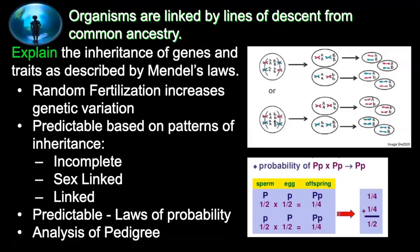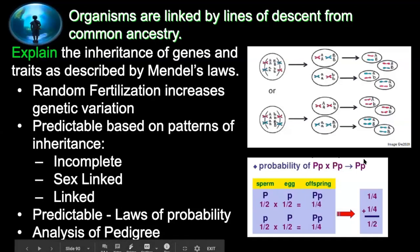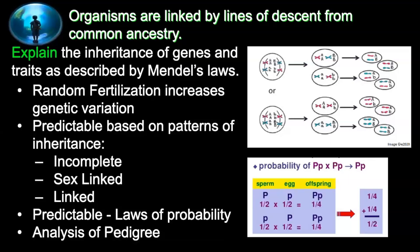Using Mendel's laws, we can explain the inheritance of different genes. To be Mendelian is straightforward dominant-recessive, and you can do Punnett squares to estimate the probability of traits. Things that are not Mendelian — like incomplete dominance, sex-linked traits, and linked traits — are not as easy to work with Punnett squares; sometimes it's easier to use probability laws. You can be given a set of data to analyze and then interpret or predict how a trait is inherited.